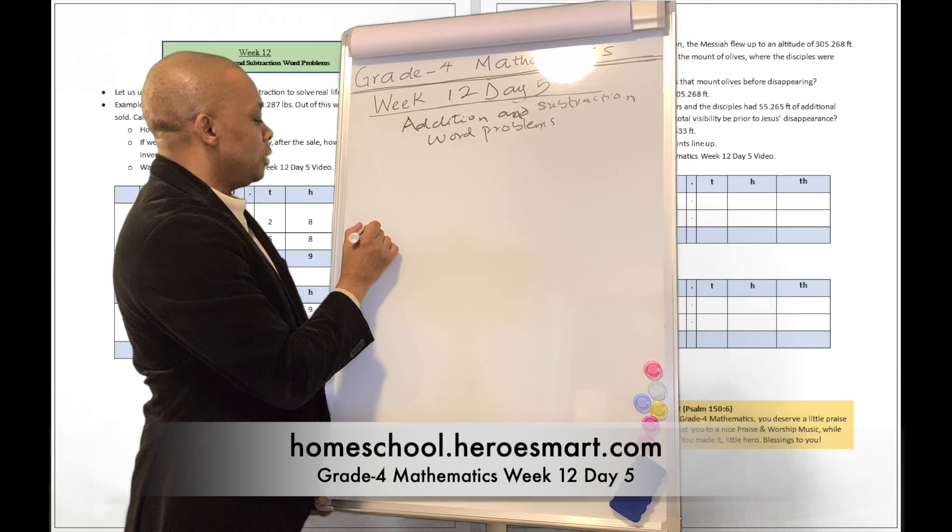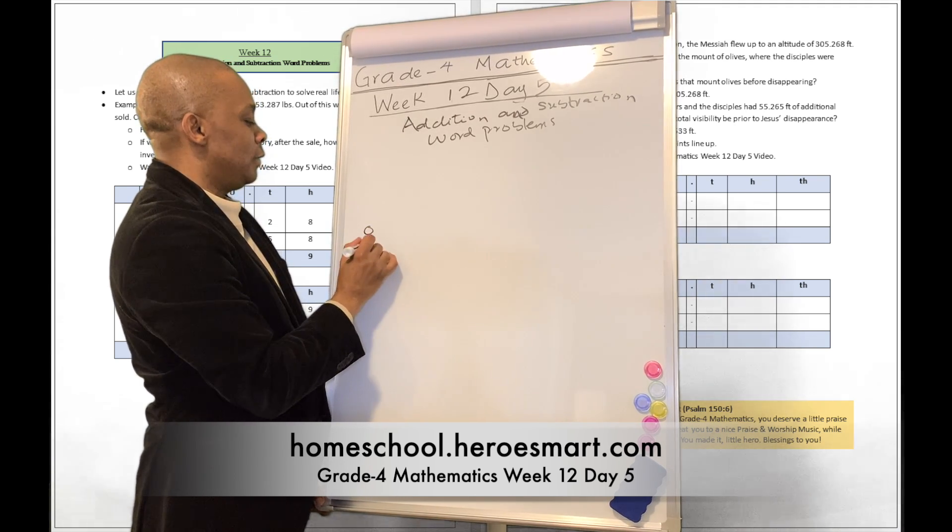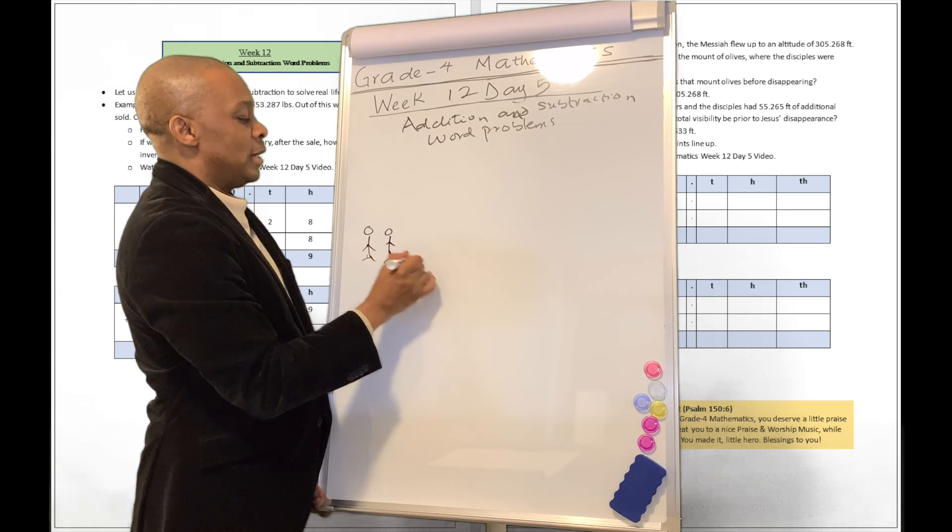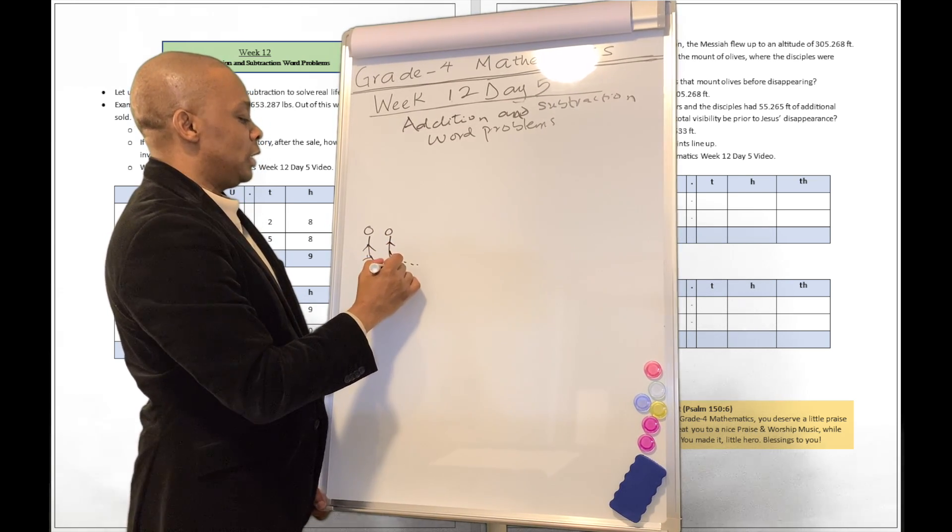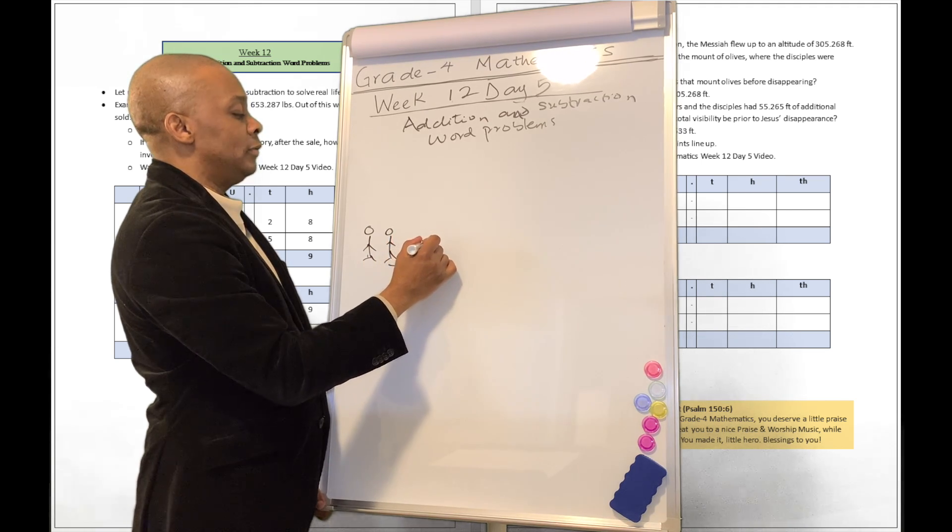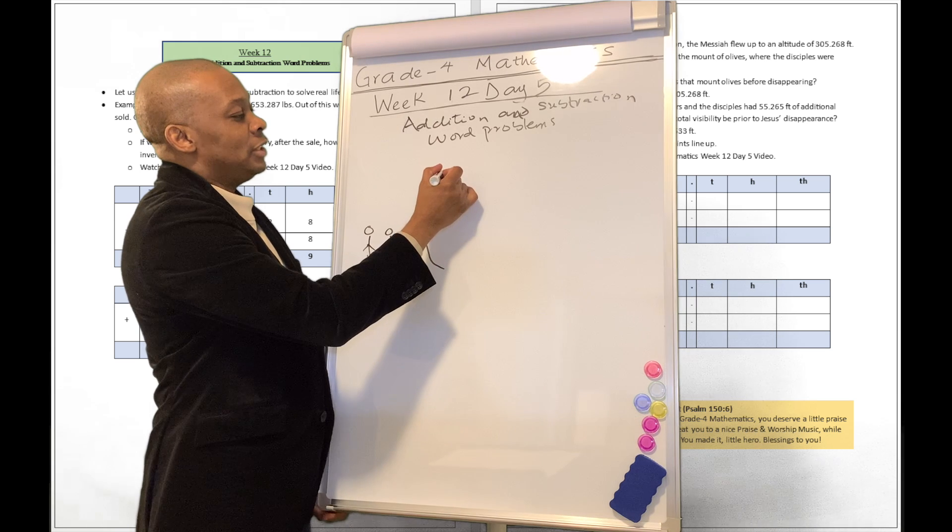All right, so here are the disciples over here. Here's Peter, James, and John and the rest of them. They were standing on the Mount of Olives like this. Okay, this is the Mount of Olives.